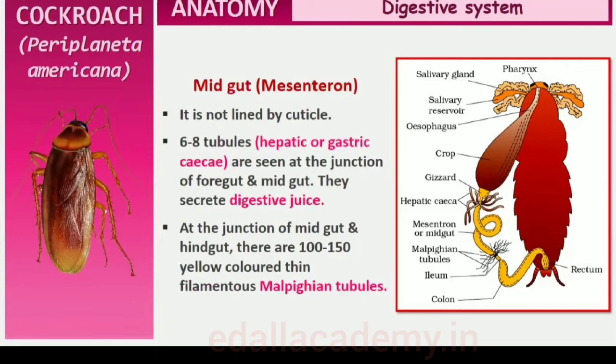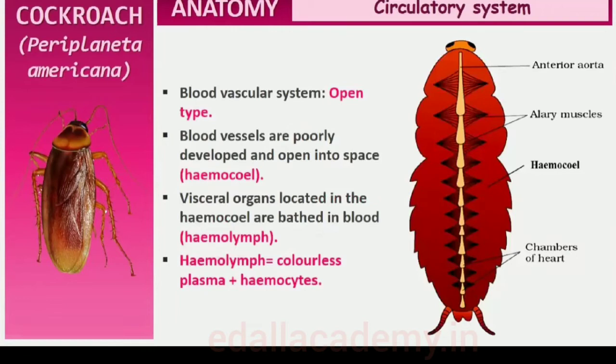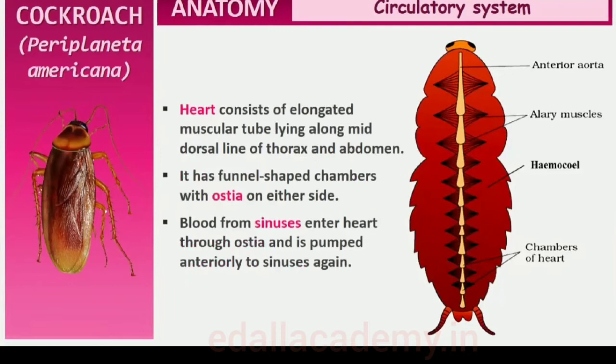The blood vascular system of cockroach is an open type. Blood vessels are poorly developed and open into spaces called the hemocoel. Visceral organs located in the hemocoel are bathed in blood, called hemolymph. The hemolymph is composed of colorless plasma and hemocytes. The heart of cockroach consists of an elongated muscular tube lying along the mid-dorsal line of thorax and abdomen. It is differentiated into funnel-shaped chambers with ostia on either side. Blood from sinuses enters the heart through ostia and is pumped anteriorly to sinuses again.